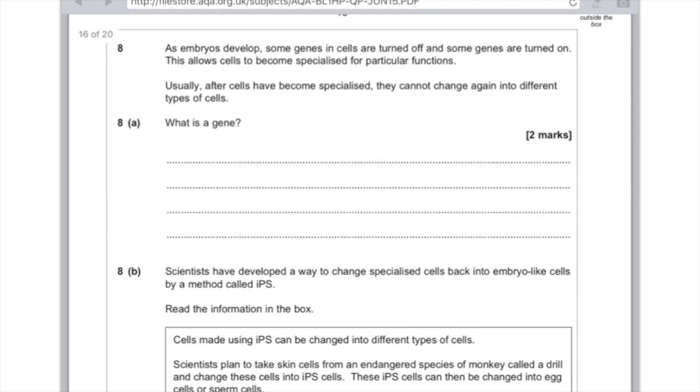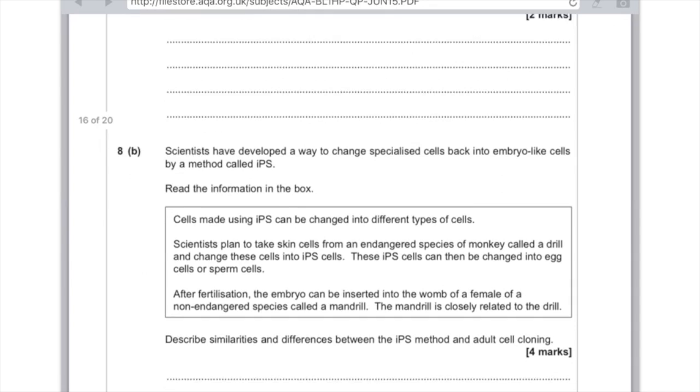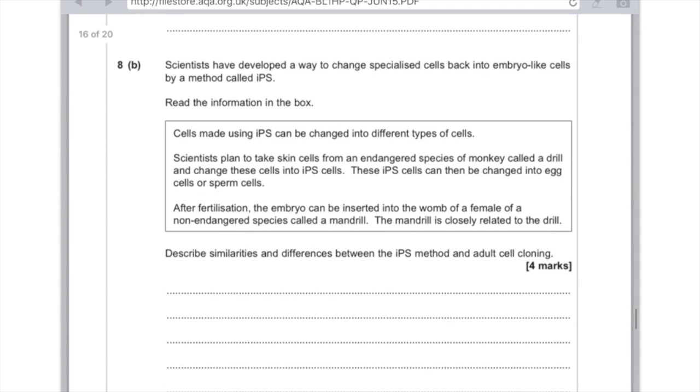8b: Scientists have developed a way to change specialized cells back into embryo-like cells by a method called IPS. Read the information in the box. Make sure you do read this information, otherwise you'll freak out when you look at the actual question.